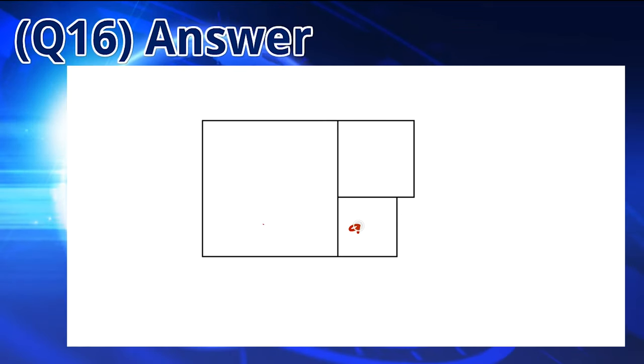The smaller square has an area of 9, so each side is 3 centimeters. The larger square has a perimeter of 32 centimeters, so each side is 8 centimeters. The medium sized square has a side length of 8 minus 3 which is 5 centimeters. So the perimeter is 5 times 4 which is 20 centimeters, so the answer is C.